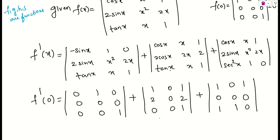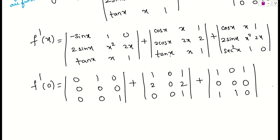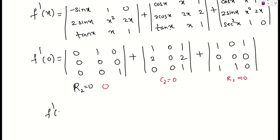Looking at each determinant: in the first one, row 2 (R2) is completely zero, so the determinant is 0. In the second one, column 2 (C2) has every element equal to 0, so the determinant is 0. In the third one, row 2 (R2) again has every element equal to 0, so that determinant is also 0.